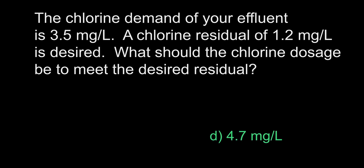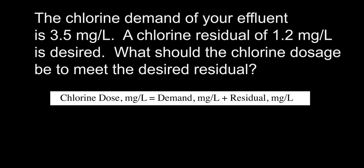The answer is D, 4.7 milligrams per liter. This is a very simple equation; however, this equation is not given to us for the exam. So having a firm understanding of how chlorine disinfection works, and memorizing associated formulas that go with it such as this one, will be helpful in passing your exam. This is a one-step solution.